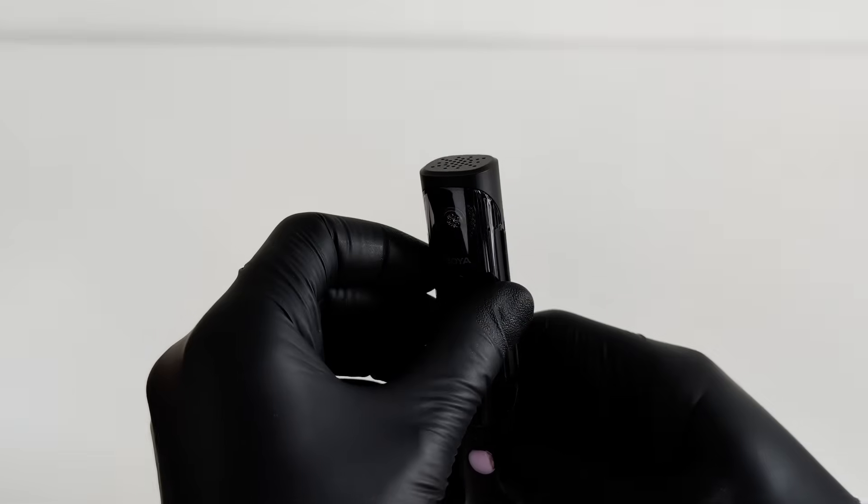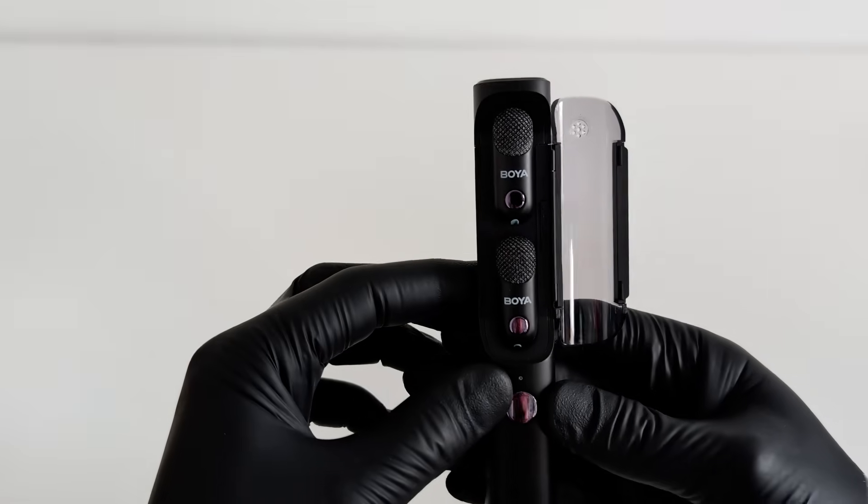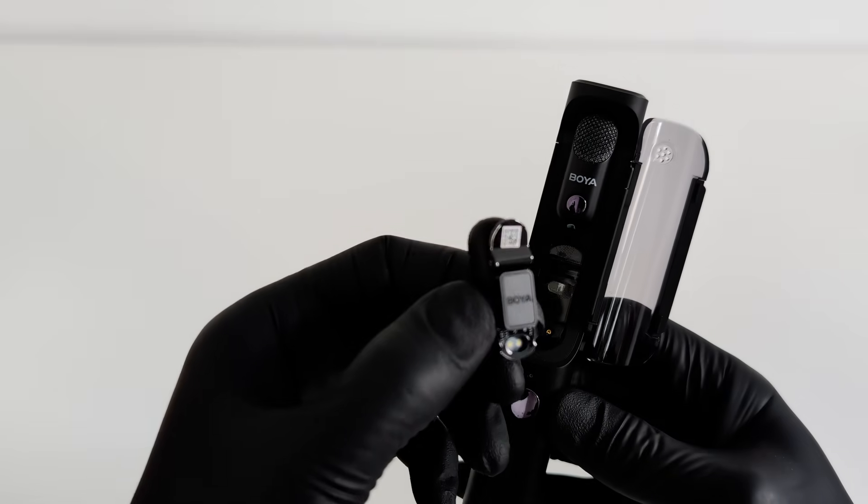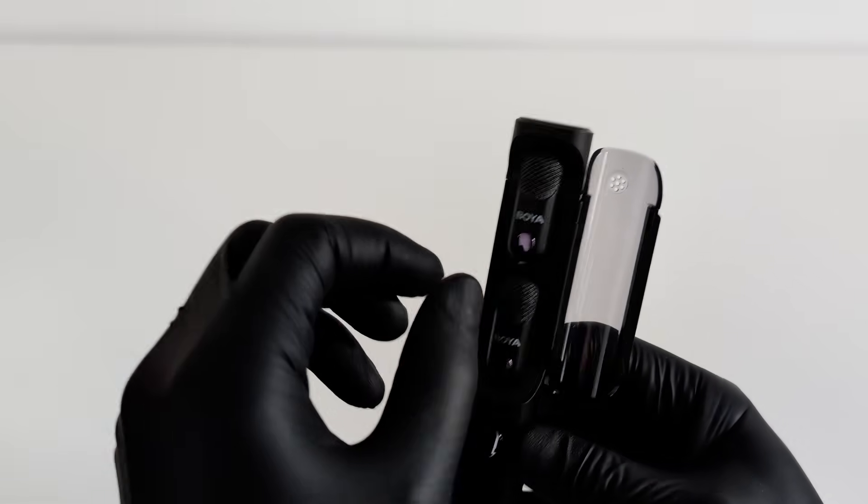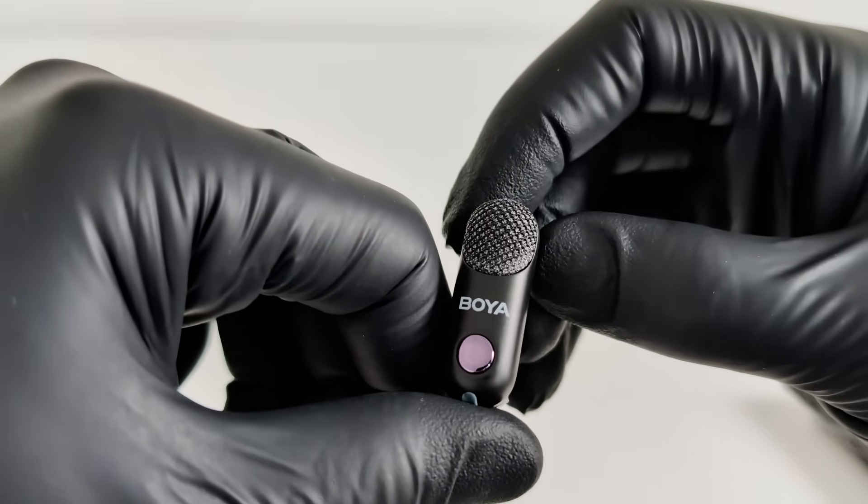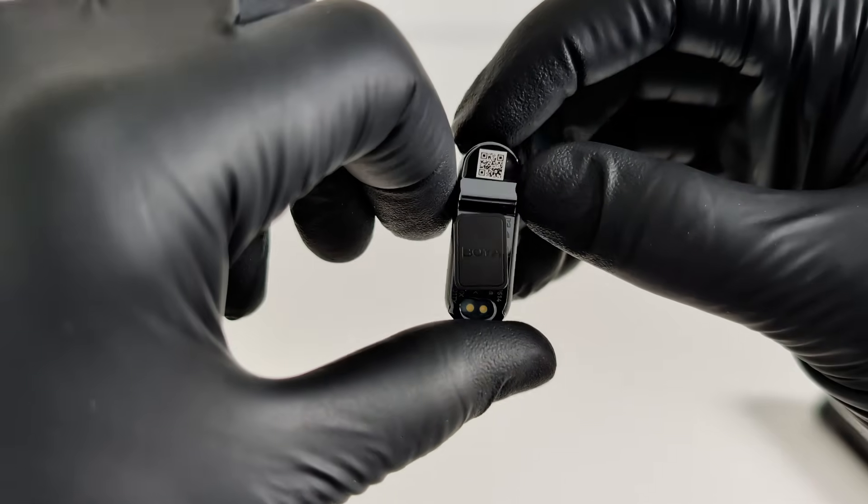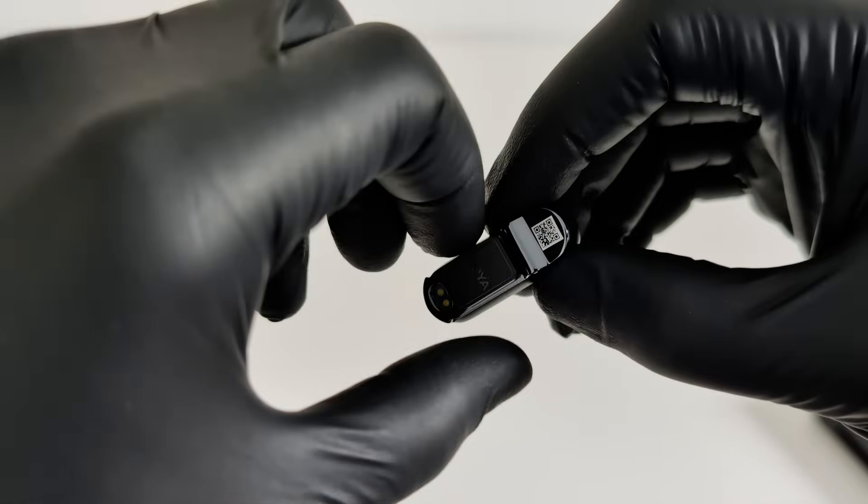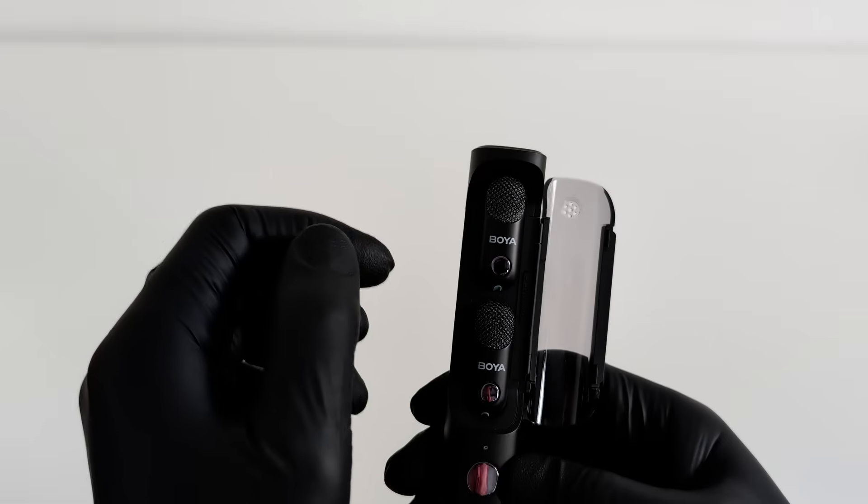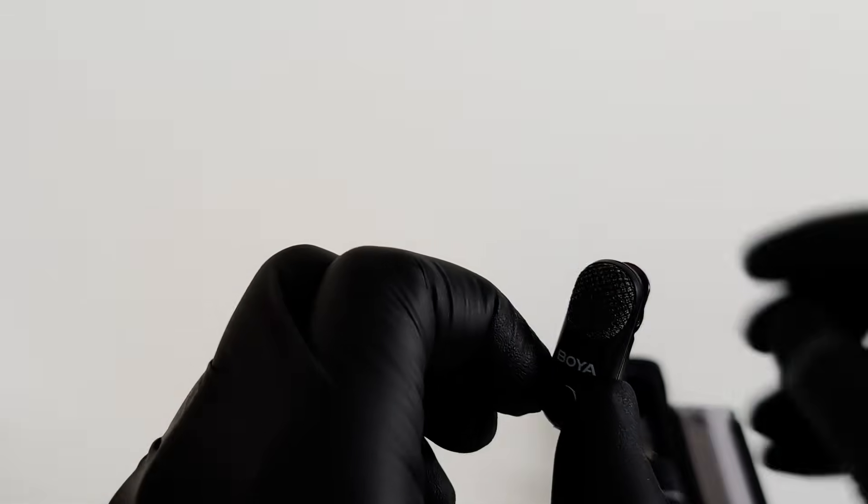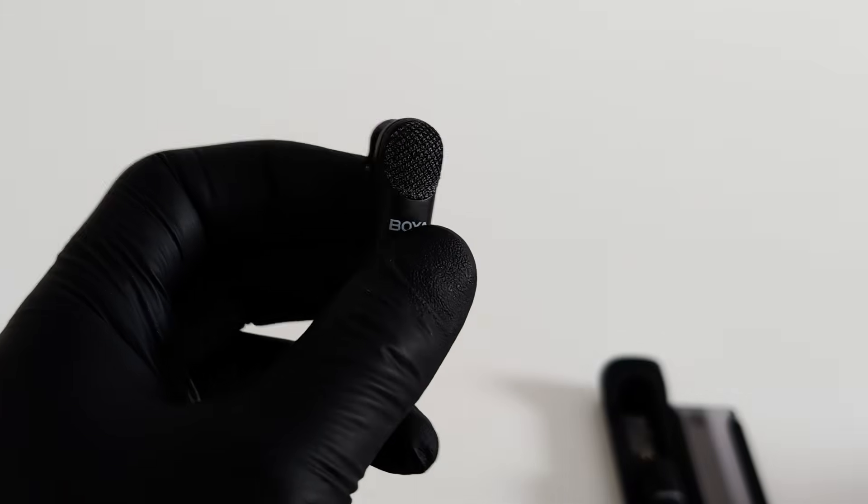And after all the tests, let's just take a closer look for a second. When you hold it in your hand, it's hard to believe how much technology is packed inside. It weighs only 7 grams. Just think about that. 7 grams. That's lighter than a regular pen cap. This is a full-fledged transmitter with its own battery and a powerful AI-powered noise cancellation system. And all of this is in a body that weighs practically nothing. Incredible engineering.